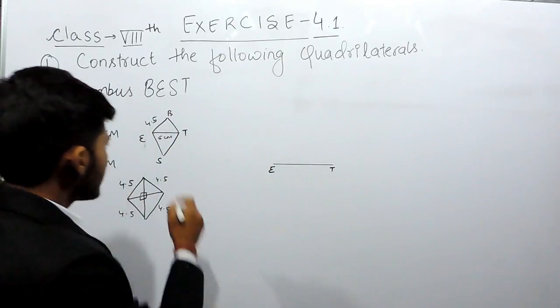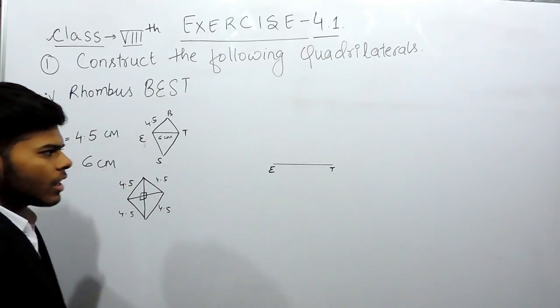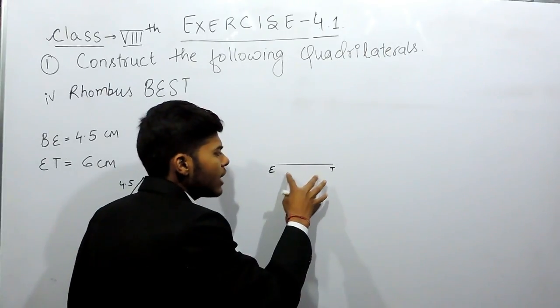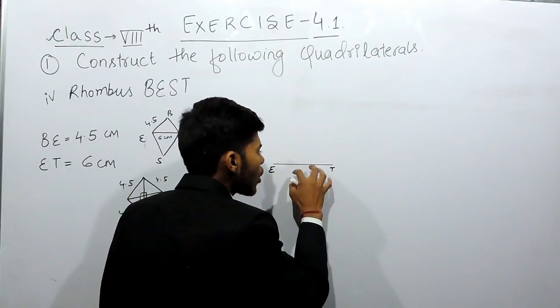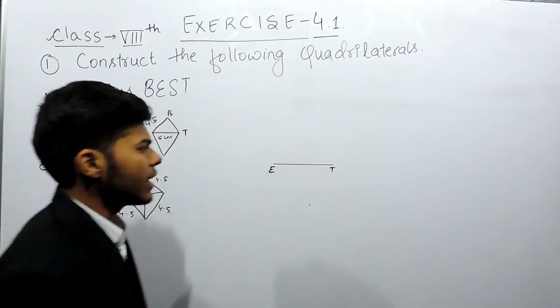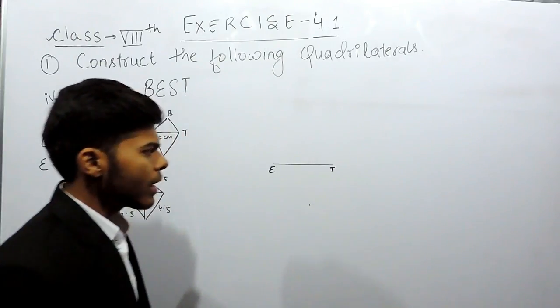Now you know that in this rhombus it is 90 degrees. So if you want to draw 90 degrees of this line segment with the help of a compass that means that you have to draw the perpendicular bisector of this line.